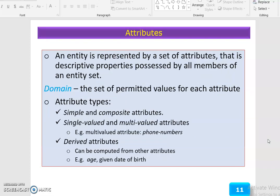Attributes: An entity is represented by a set of attributes, which are descriptive properties possessed by all members of an entity set. Domain is the set of permitted values for each attribute. Attribute types include simple and composite attributes, single-valued and multi-valued attributes like phone numbers, and derived attributes that can be computed from other attributes, for example age given date of birth.